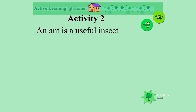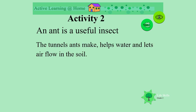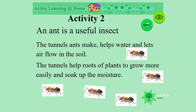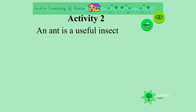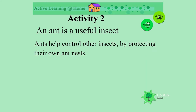An ant is a useful insect. The tunnels that they make help moisture, water, and air flow into the soil. This helps plants to grow more easily as they soak up the moisture and there's space for their roots. Ants are also useful because they control other insects when they are protecting their nests.